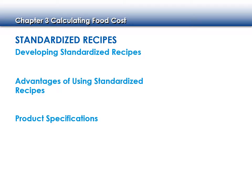One benefit of a standardized recipe is it tells us what our product specifications are. Product specifications can be quality and quantity. What's an example of a quality specification about an ingredient we would use in a recipe?